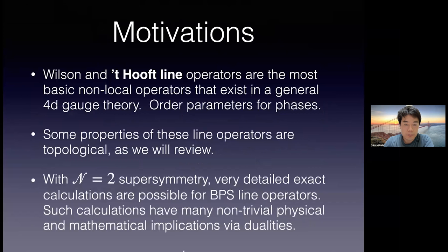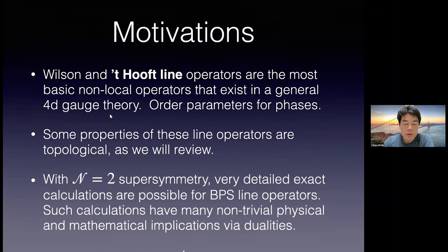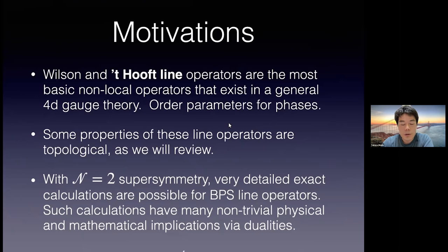Wilson and 't Hooft line operators are the most basic non-local operators in gauge theory. I'm assuming four-dimensional spacetime, ordinary zero-form gauge symmetry, and a continuous gauge group — though we can relax these conditions. These line operators serve as order parameters for the phases of gauge theories, and some of their properties are topological.